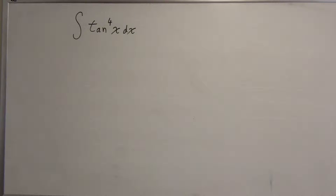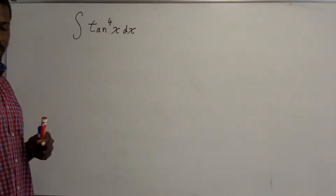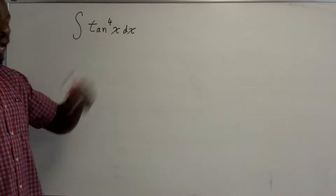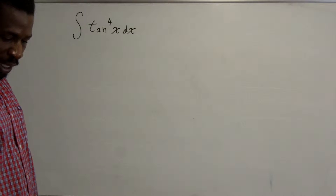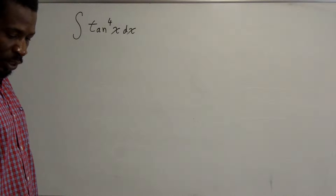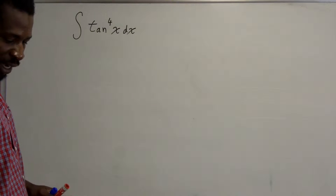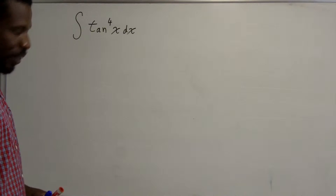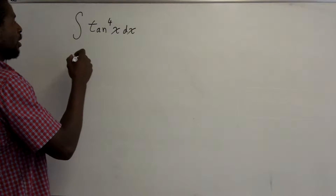Now we will look at integrals involving even powers of tangent where there are no factors of secant. Whenever an integral involves even powers of tangent with no factors of secant, what we want to do is convert a tangent squared factor to a secant squared factor and then do the integration from there.